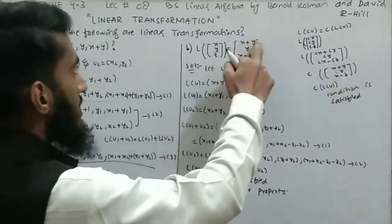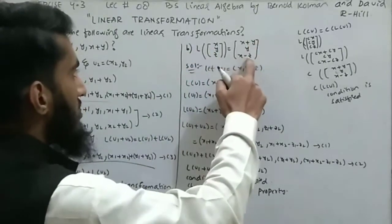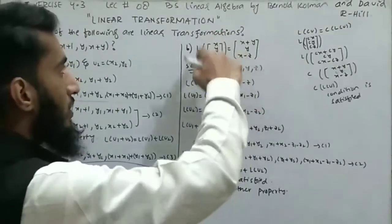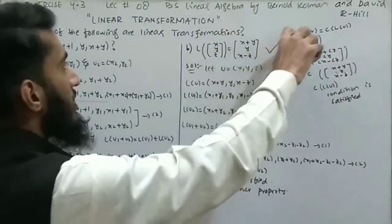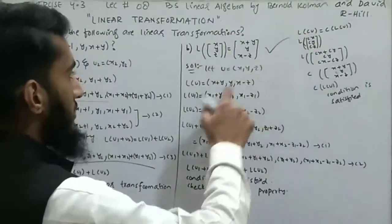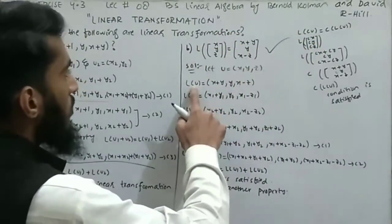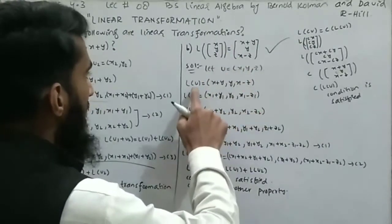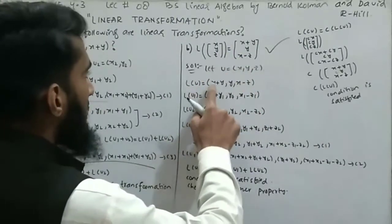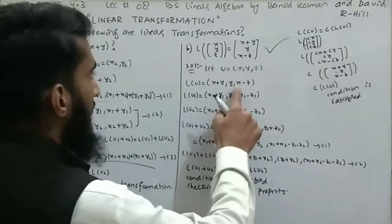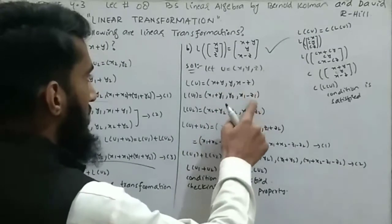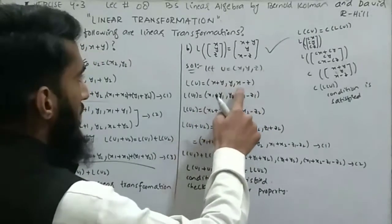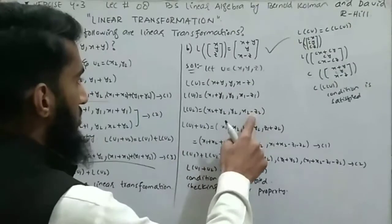Move to part B: L(x, y, z) = (x+y, y, x-z). Let u = (x, y, z). So L(u) = (x+y, y, x-z). Replace u with u1: L(u1) = (x1+y1, y1, x1-z1). L(u2) = (x2+y2, y2, x2-z2).